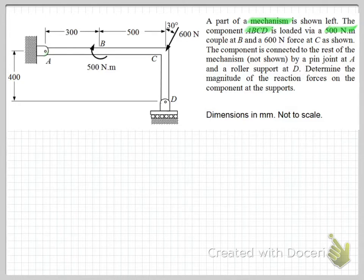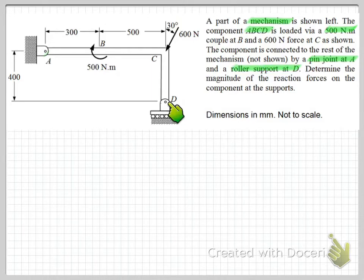We're told we have a pin joint at A — here's our pin connection for point A. And we have a roller support at D, down here. So that will give us information about the reaction forces at those supports or constraints when we draw our free body diagram.